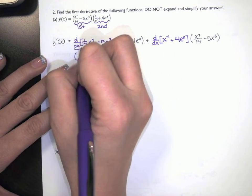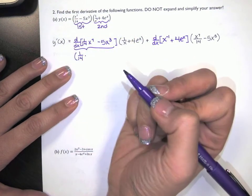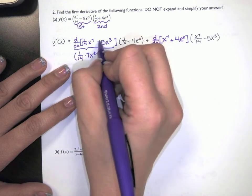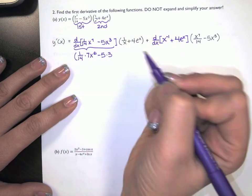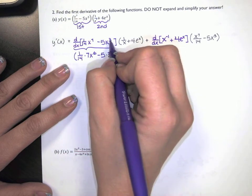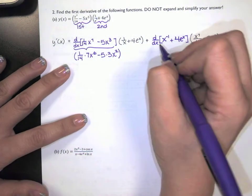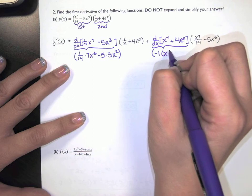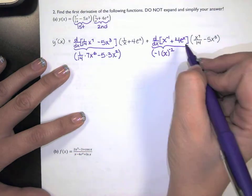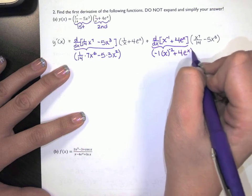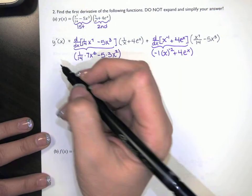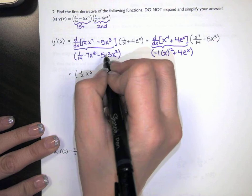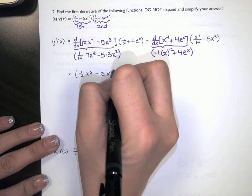I've got a constant, so I bring it down times the derivative of x to the seventh — bring the power down, 7, x to the one less power. Then I bring my negative 5 down, then my 3 down, and multiply by x to the one less power: that's 3 times x to the second. Over here, bring the power down, multiply by x to the one less power — negative 1 minus 1 is negative 2. The derivative of a constant times an exponential is that constant times the exponential. And 7 over 14 simplifies to 1 half, so this is 1 half x to the sixth, minus 15x squared.